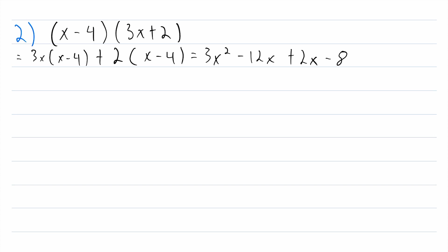Now, just as before, we've got to add like terms. We only have one x squared term, so we bring that straight down: 3x squared. We have two x terms — minus 12x and plus 2x — so we combine those: minus 12x plus 2x is minus 10x. And we've just got one constant at the end, minus eight. So this expression is equal to 3x squared minus 10x minus eight.